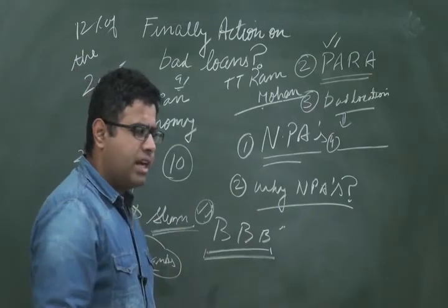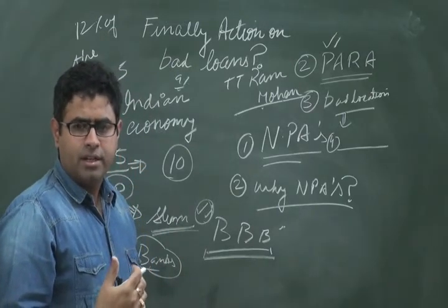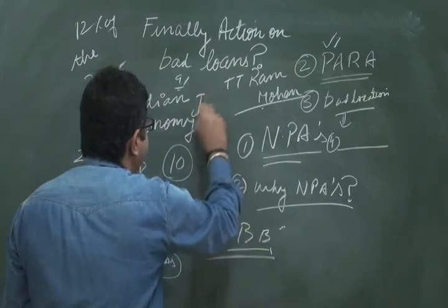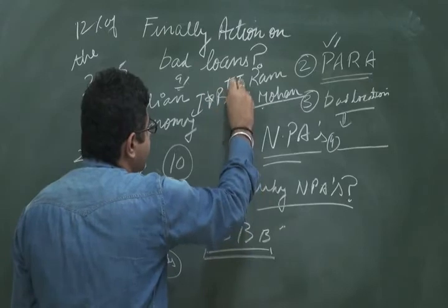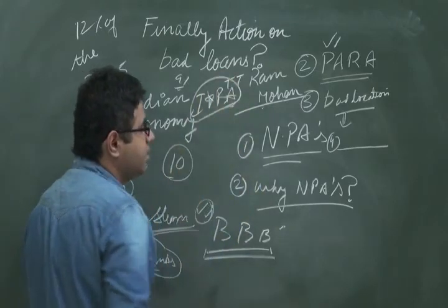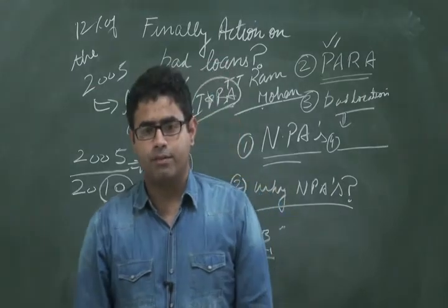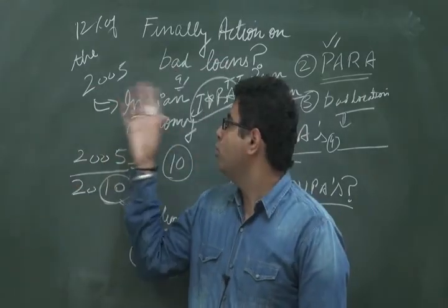There are other efforts the government has taken in the form of the Insolvency and Bankruptcy Act (IBA). This is another area that needs to be effectively implemented if the government desires to do away with this issue of bad loans.